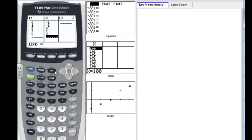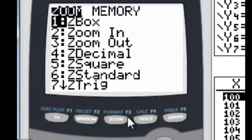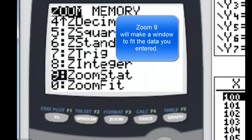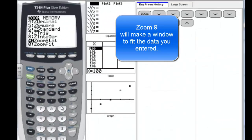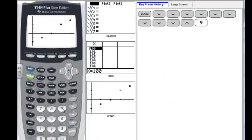Now to look at the scattergram, we want to hit zoom, and we have all these options. And if I arrow down past what we see here, right here at 9, it says zoom stats. So we want to choose that. You can either press enter here, or anytime you can just press the 9 when you're in the zoom, and it will automatically plot our data.